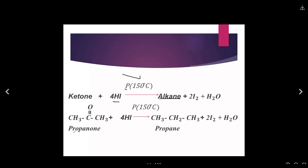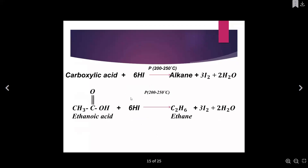A typical example of a ketone member is propanone. Propanone reacts with four molecules of hydrogen iodide to produce propane. And for carboxylic acid, carboxylic acid also reacts with hydrogen iodide to produce an alkane — so we have ethanoic acid producing ethane.